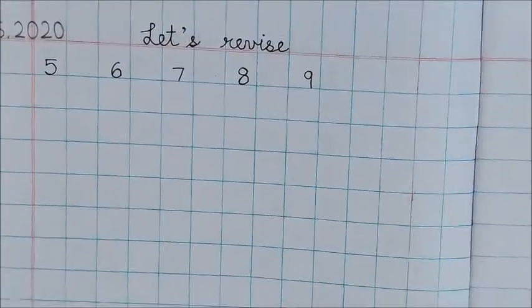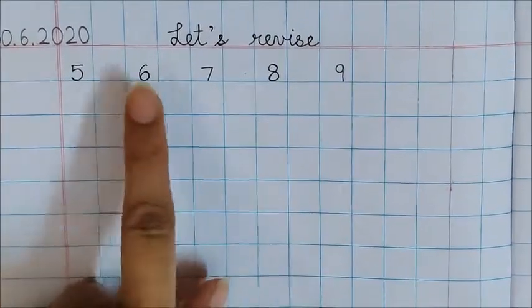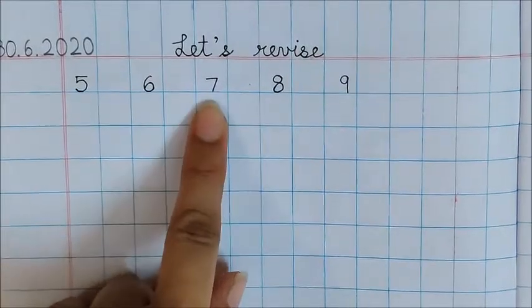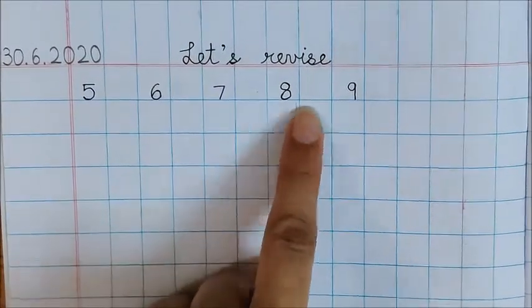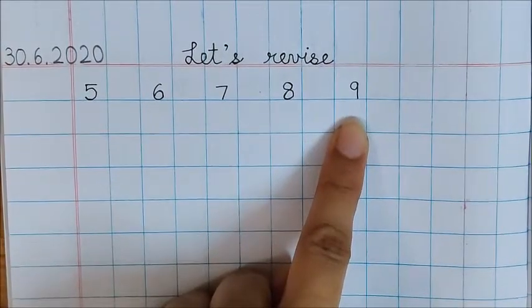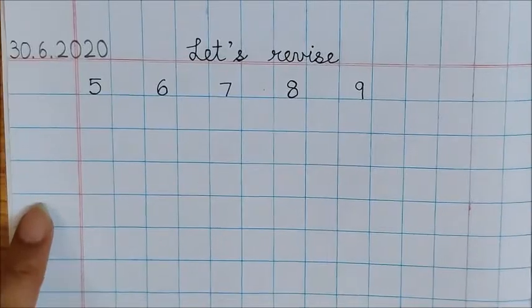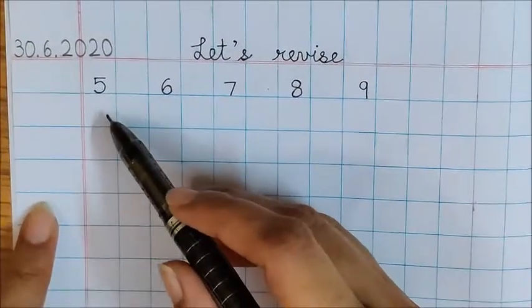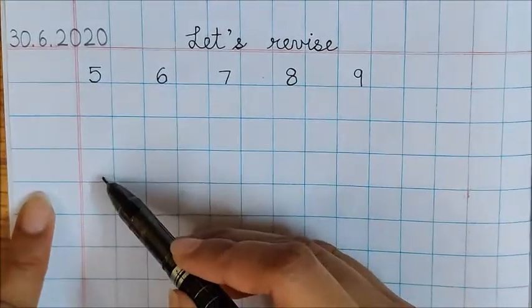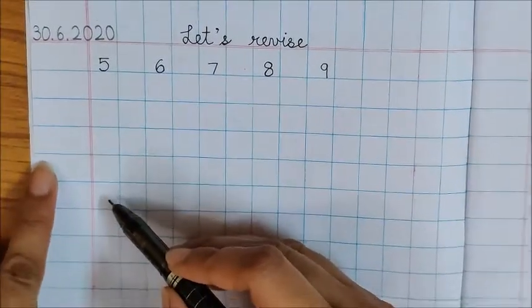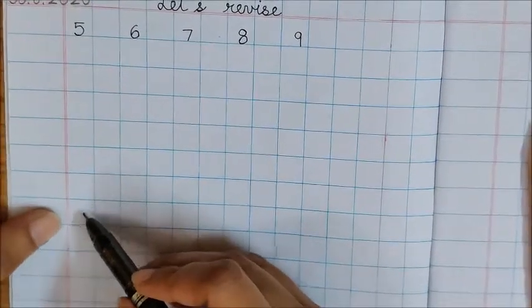So you have to write here 5, leave one box, 6, leave one box, 7, leave one box, 8, leave one box and 9. Now after doing this setting, please leave 7 boxes after 5, and after leaving 7 boxes, in the 8th box,